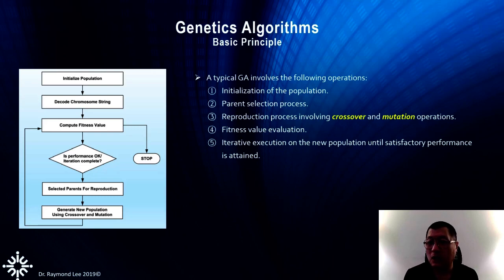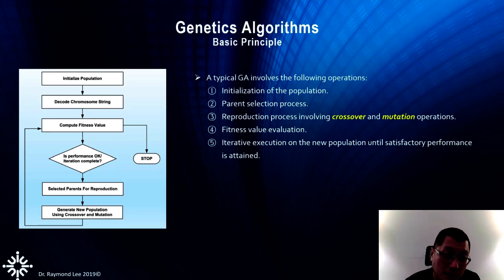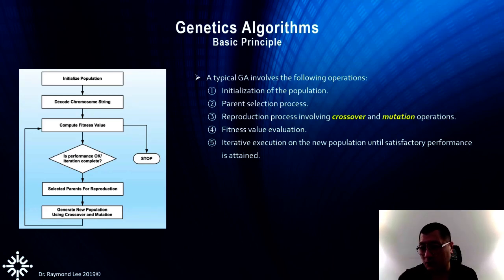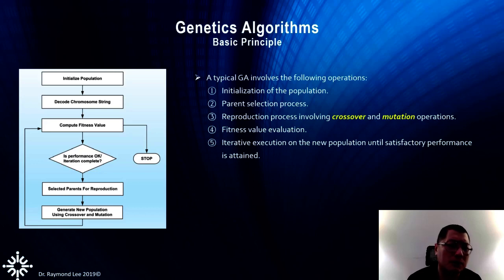Those offspring who are better than the previous generation are kept in the next generation. Once you have another 1000 for the next generation that's better than the previous, the next generation overall will be better. After 1000 or 1 million generations, the capability of the new generation must be overall better than the previous. So you may ask: what is the evaluation function?